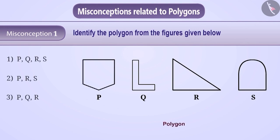Many students do not understand the concept of polygons correctly. They think that since all these shapes are closed figures, they are all polygons. So they give the answer as option 1, which is the wrong answer.